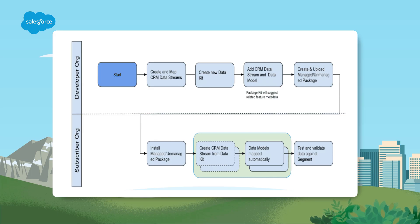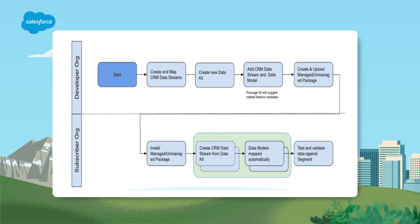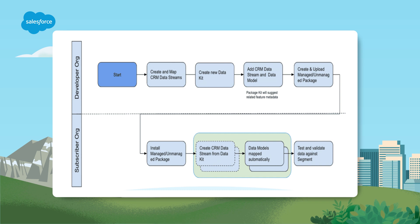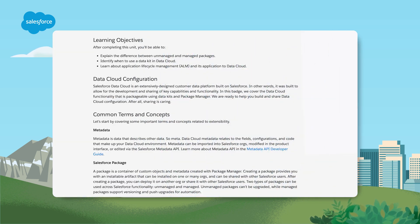When you create a Salesforce package, it automatically includes all the related metadata or none of it. This approach is a simple way to ensure platform referential integrity is intact. However, this all-or-nothing approach can introduce a lot of duplicated metadata or cause certain functionalities to fail due to the lack of related metadata. Because of this, there are important reasons why you might consider using data kits for Data Cloud.